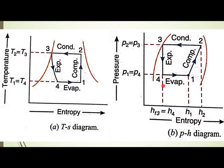The refrigerating effect occurs in process 4 to 1. Then 1 to 2 is compression. In 2 to 3, heat is rejected from the condenser to the surroundings. And 3 to 4 is the expansion process in the expansion valve. The 2 to 3 process is isobaric, so P2 equals P3, and the 4 to 1 process is isobaric, so P4 equals P1.